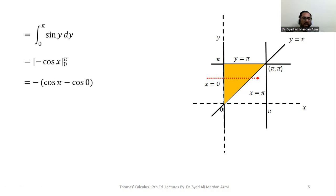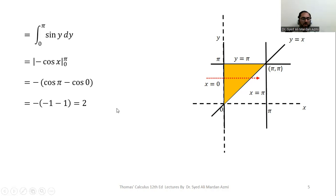The integral of sin(y) is −cos(y), evaluated from 0 to π. Applying the Fundamental Theorem of Calculus: −[cos(π) − cos(0)]. Taking the negative sign outside gives cos(π) − cos(0). cos(π) = cos(180°) = −1, and cos(0) = 1. Note: when π is used as an angle, its value in degrees is 180°. Substituting: −(−1) − (1) = 1 + 1 = 2. Our final answer is 2.